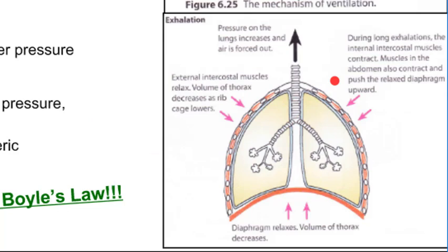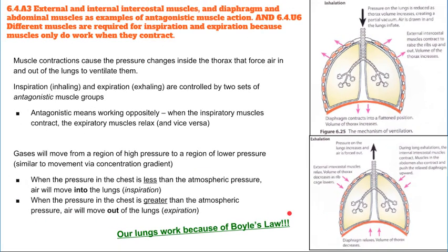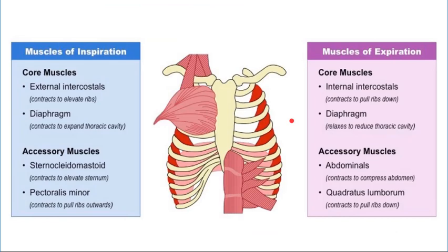As pressure rises above atmospheric pressure, air quickly flows out of the lungs through the mouth or nose. Air continues to flow out until the pressure in the lungs falls back to atmospheric pressure. It's important to understand how the different muscles contract, when they contract, and what that does to volume — similar to how contractions and valve states work in the heart. Gases move from a region of high pressure to a region of lower pressure — like a concentration gradient — and that's how exhaling and inhaling work.